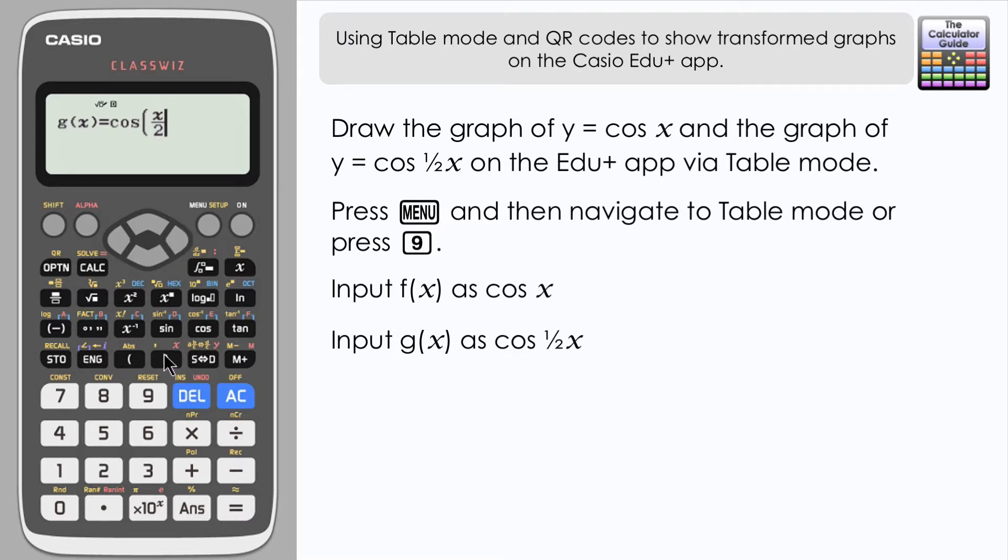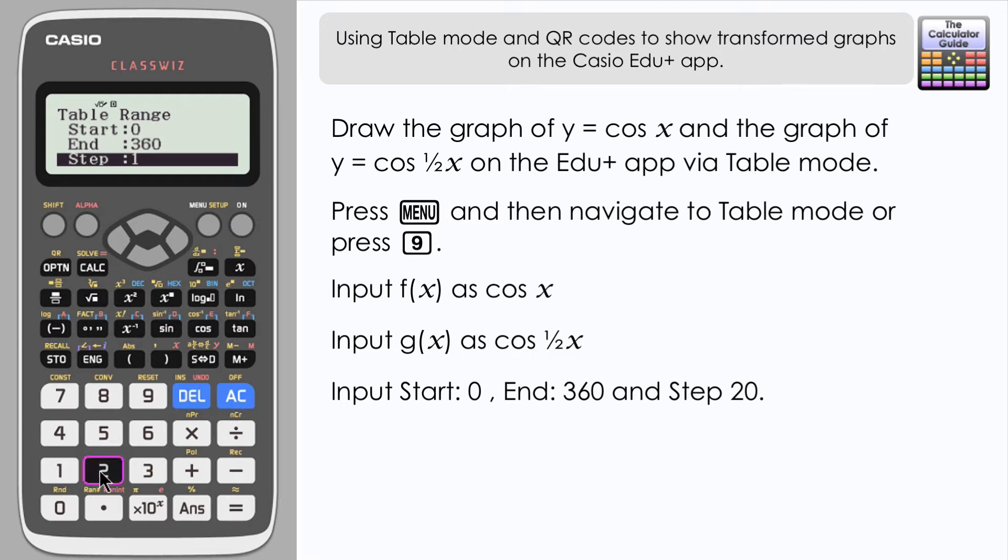Now I'm going to initially show the range between 0 and 360, so I'm going to have a start of 0 and an end of 360 and a step of 20 degrees so it will show me coordinate points from the graphs every 20 degrees. Press equals and here we have our dual table. f(x) is cos x and g(x) is cos of a half x.